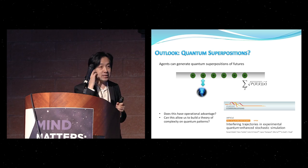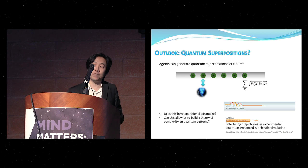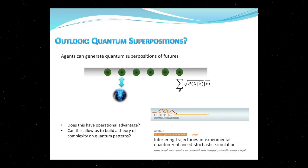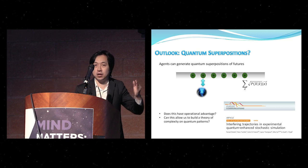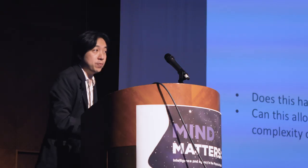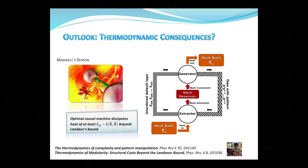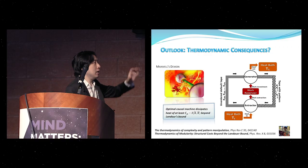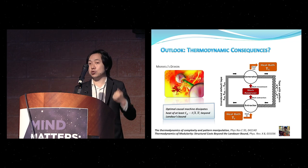I want to end with a few open questions. When we build these models using quantum mechanics, one bonus is that it's sometimes possible to create superpositions of all possible conditional futures — instead of a stochastic sample of one future, we have a superposition of all futures. This encodes an exponentially large vector in a linearly growing number of qubits. The question is: can we perform interference experiments to learn more about the future than we can classically? Additionally, quantum agents may also be more energetically efficient, as current results relate complexity with information efficiency.